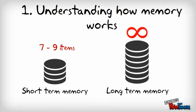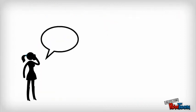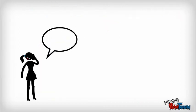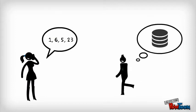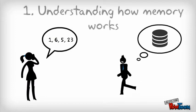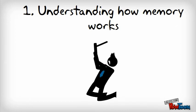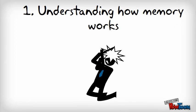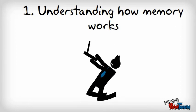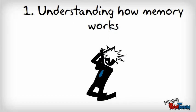On the other hand, long-term memory indefinitely stores an unlimited amount of information. For instance, if I gave you a list of numbers like 1, 6, 5, and 23, it would be stacked in your short-term memory for a little while, but you would probably have forgotten it in a couple of minutes.